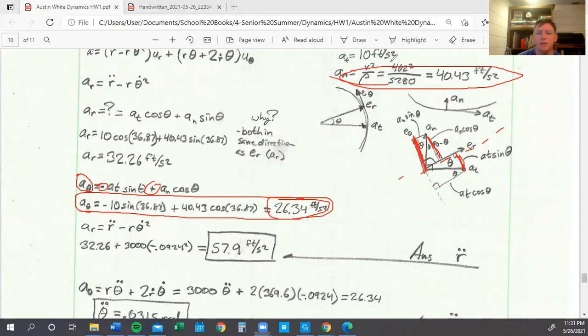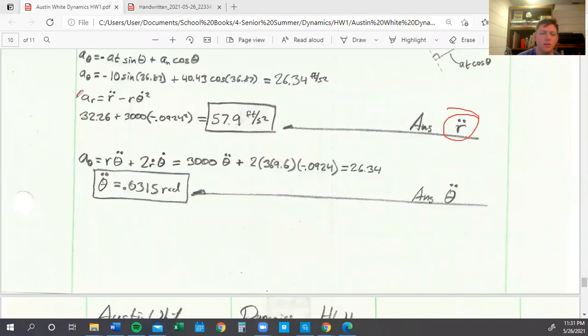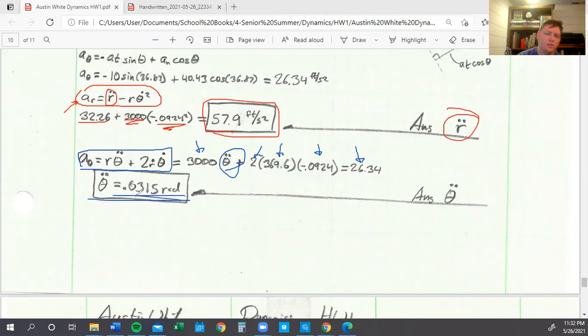Now we have to plug those two into their respective equations. To find R double dot, we just plug in our AR which is 32.26, and our radius and theta dot that we found before. By equaling all this to R double dot, we get that equals 57.9 feet per second squared. We do the same thing for theta double dot where we plug in the components we found earlier. We equate them all to theta double dot, which equals 0.0315 radians per second squared. That clears up problem thirteen.